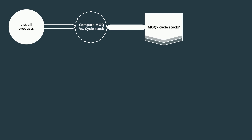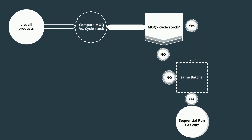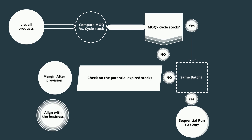Ask yourself: if the MOQ cover is greater than the cycle stock, you have two choices. If it's no, there is no problem. If it's yes, ask another question: is there any product that has the same batch? If yes, use a sequential run strategy. If no, check on the potential expired stocks, ask your finance business partner to calculate the margin after the provision, and if it dilutes the margin, align internally with your business and discontinue the product.